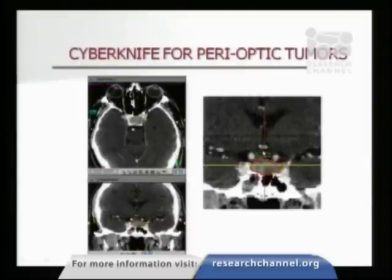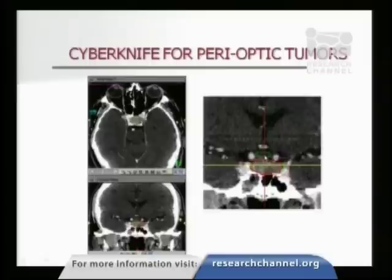Tumors very close to very sensitive nerves that couldn't be treated with a gamma knife procedure — here's a division nerve right between the eyes, and a pituitary region tumor that nearly touches it. We're able to give the green dose to that target and have about 50% fall-off within one millimeter of the proximity of this nerve, sparing vision. After treatment, the patient's vision got better and the tumor got smaller.